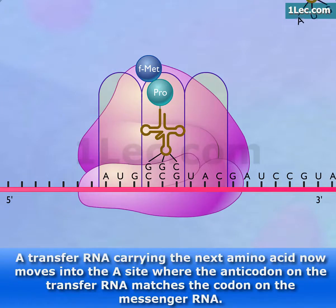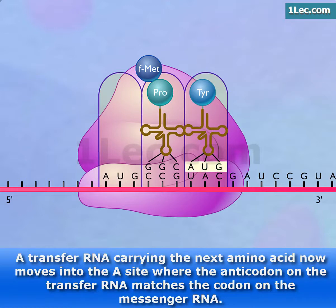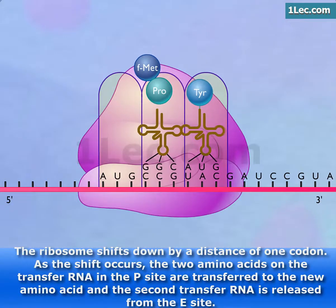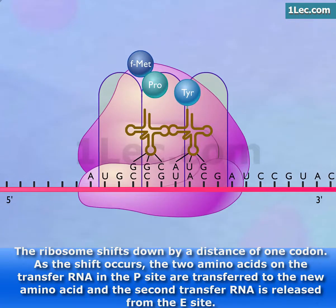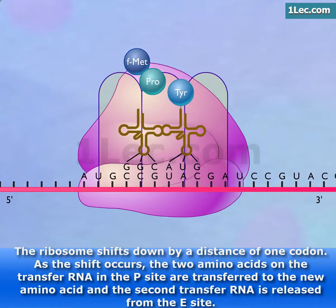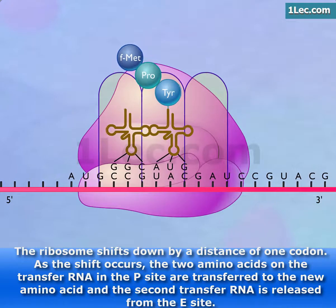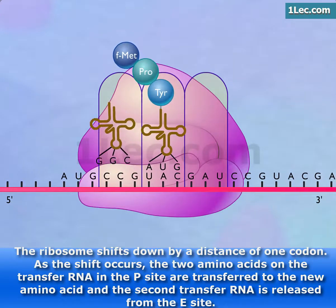A transfer RNA carrying the next amino acid now moves into the A-site where the anticodon on the transfer RNA matches the codon on the messenger RNA. The ribosome shifts down by a distance of one codon. As the shift occurs, the two amino acids on the transfer RNA in the P-site are transferred to the new amino acid and the second transfer RNA is released from the E-site.